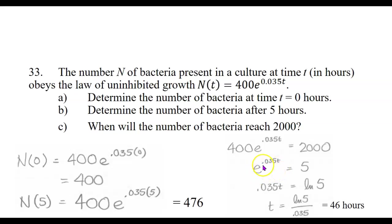Now how do we undo the e? With the natural log function. Take ln of both sides, so ln of e to the 0.035t would just be 0.035t, and we did take ln of both sides so on the other side we got ln of five.